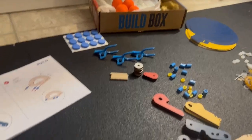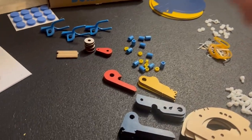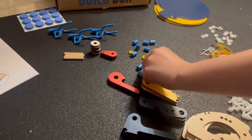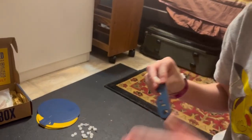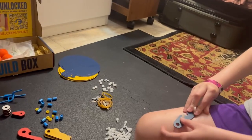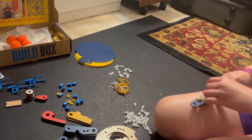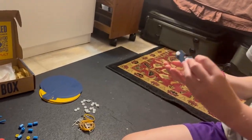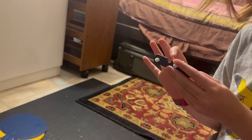All right, so step one. We're looking at the steps here. We need, I think it's this, and then two of the longer white bolts, right, and then two of the yellows. So let's put those all together and see what happens. I don't think they tighten, I think you just put them on.